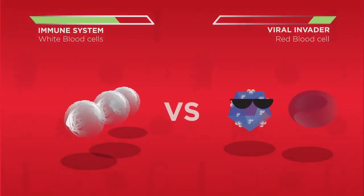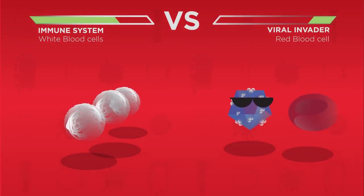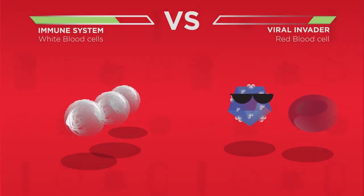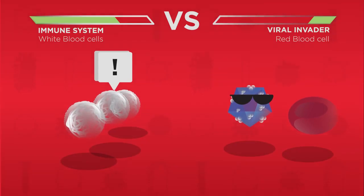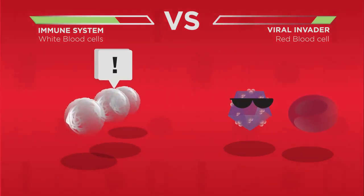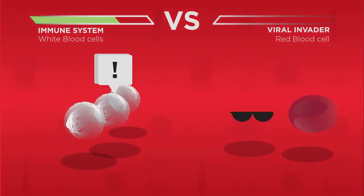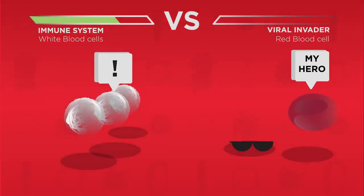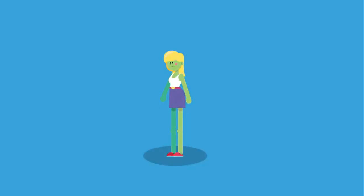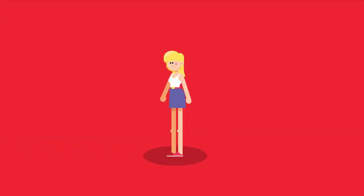Fortunately, the human immune system is very good at dealing with viral invaders. Sometimes our immune system will recognize the virus as an intruder and will destroy the virus before it gains entry into the cell. Even after infection begins, our immune system destroys the virus and the person recovers. Sometimes, however, the immune system cannot destroy the virus fast enough and the virus can cause permanent damage or death.